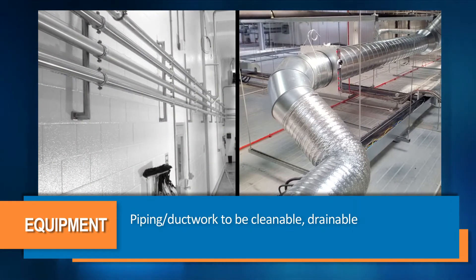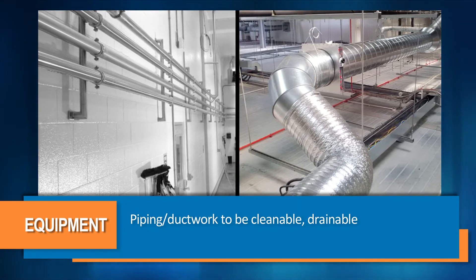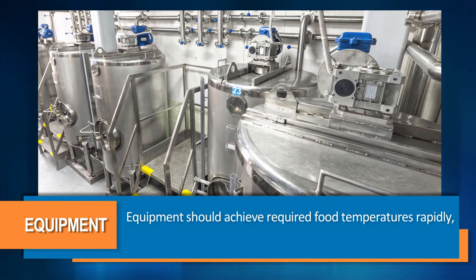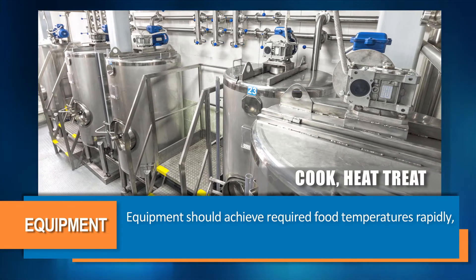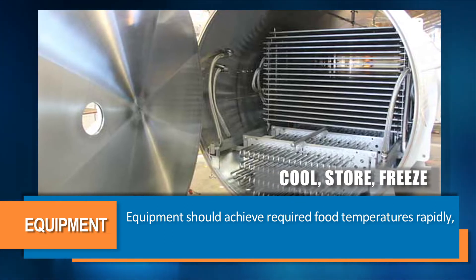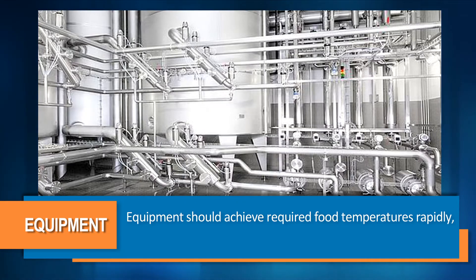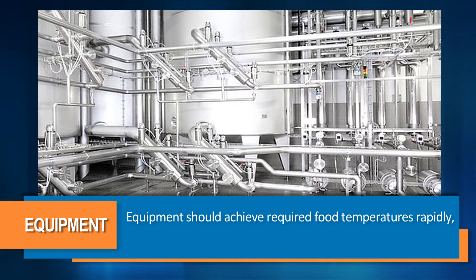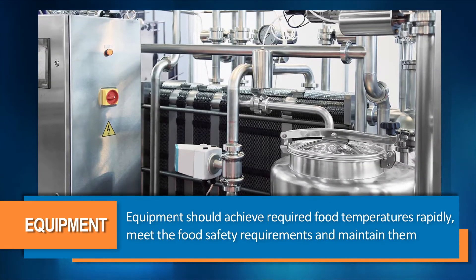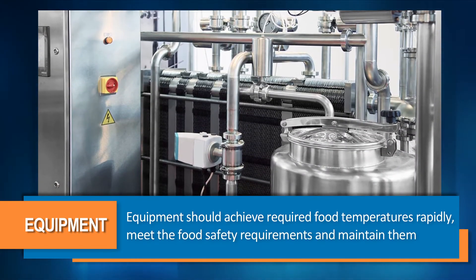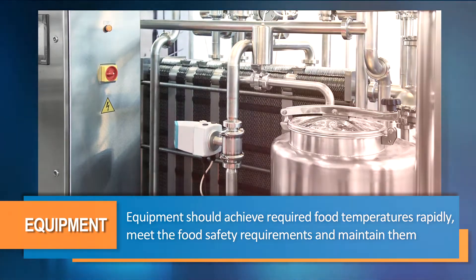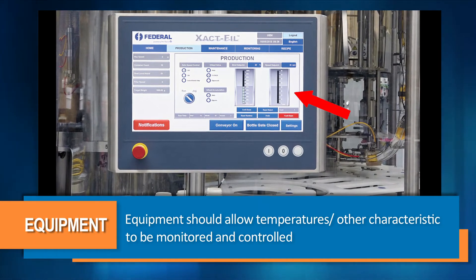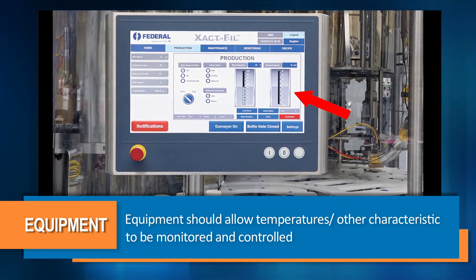Piping and ductwork shall be cleanable, drainable, and with no dead ends. The equipment used to cook, heat treat, cool, store or freeze food shall be designed to achieve the required food temperatures as rapidly as necessary to meet the food safety requirements and maintain them effectively.